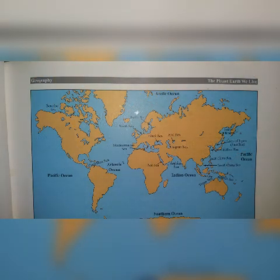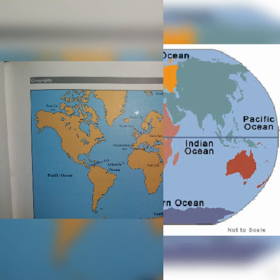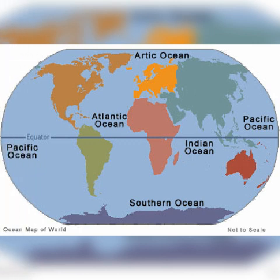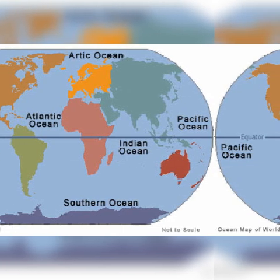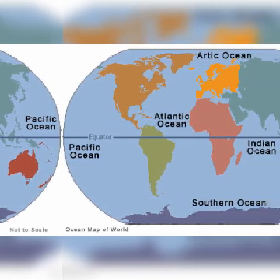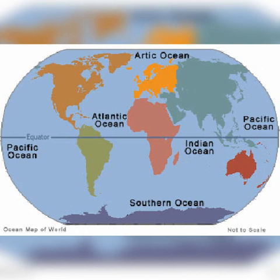There are five oceans in the world. What are they? Pacific Ocean, Atlantic Ocean, Indian Ocean, Antarctic Ocean — that is called the Southern Ocean — and Arctic Ocean. Out of these oceans, which one is the biggest? The Pacific Ocean is the biggest ocean. And which ocean is the deepest? The Atlantic Ocean is the deepest ocean in the world.